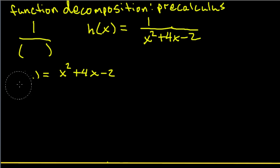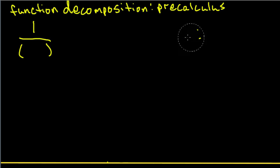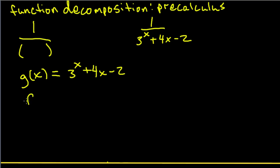Let's do one more example of this. Let's say we have 1 over 3 to the x plus 4x minus 2. So g(x) is simply what's in the denominator. So 3 to the x plus 4x minus 2. And f(x), if we cover up g(x) with our finger and put an x there, then we just get 1 over x.